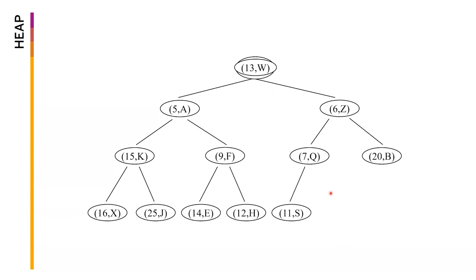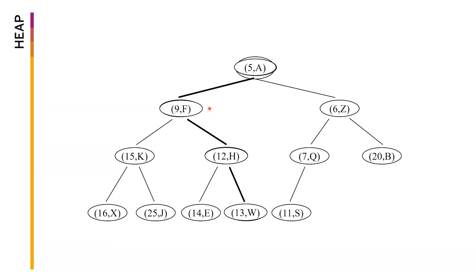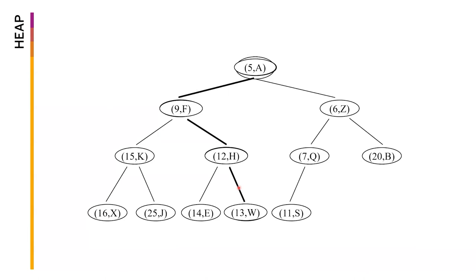To recap: 4C goes out, 13W goes to the top — 13W being the last element. We demote it as it goes down. As long as the heap property is violated, it keeps being demoted until it arrives at its appropriate level.